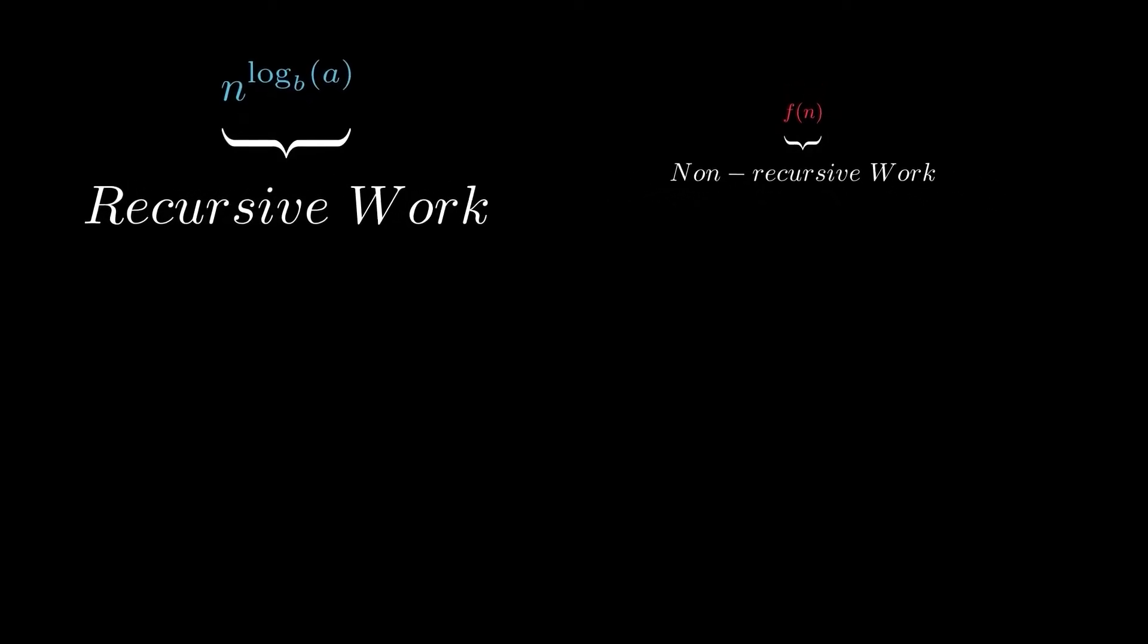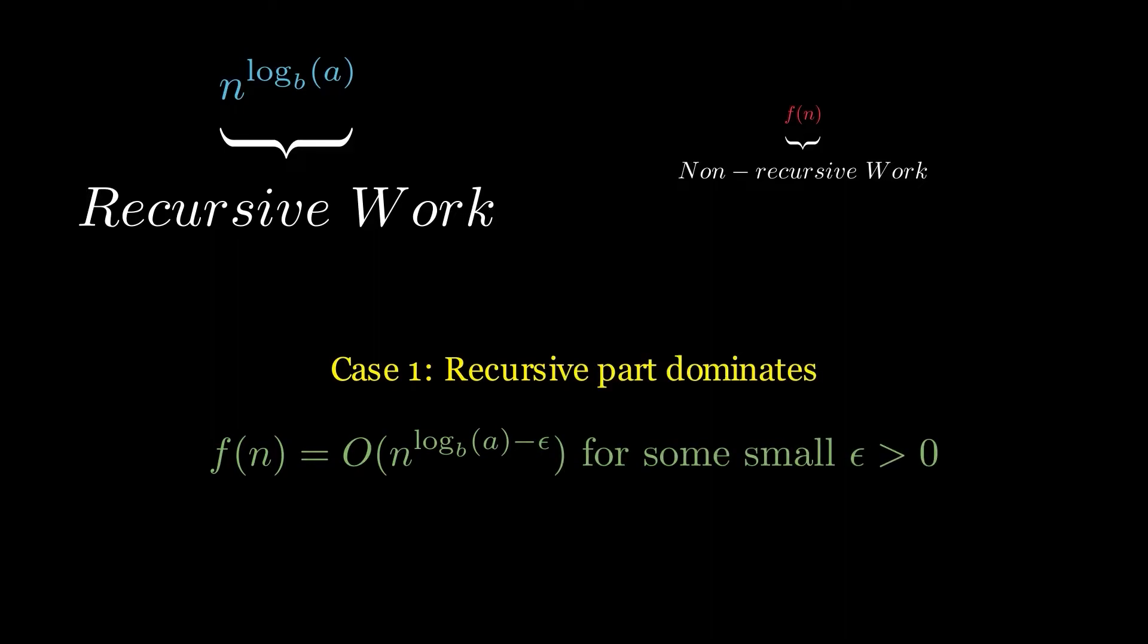In case 1, the recursive part of the algorithm is significantly more dominant than the non-recursive part. This occurs when f(n) is polynomially smaller than n^(log_b(a)). As a result, the overall time complexity is determined primarily by its recursive component, leading to the complexity Θ(n^(log_b(a))).